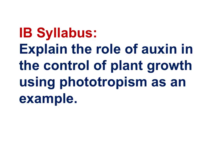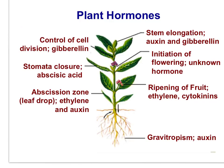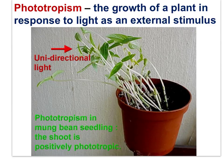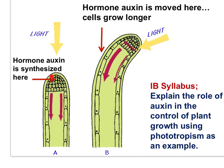Here is the IB syllabus statement: Explain the role of auxin in the control of plant growth using phototropism as an example. Auxin is a hormone that controls growth at the apex of the plant — the shoot apex and the root apex. Phototropism is the growth of a plant in response to light as an external stimulus arriving from one direction. Auxin is synthesized by the apical meristem — produced at the growing tip. When the sun is directly overhead, growth along the stem is uniform, as auxin concentrations are equally distributed on both sides of the stem.